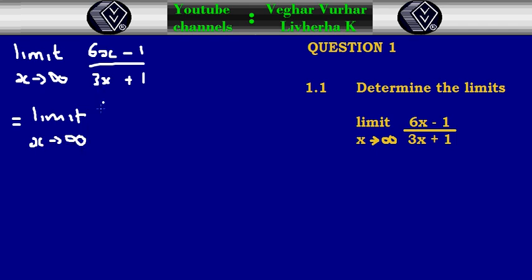We have 6X divided by X, minus 1 divided by X, over 3X divided by X plus 1 divided by X. You can cancel the X and then you have the limit of X approaches infinity.